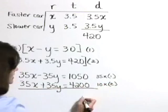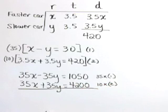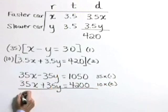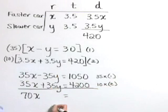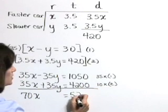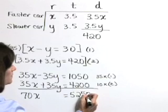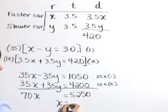Now we're ready to add these equations together. Our y variable cancels. Up front, we get 70x, and that's equal to 5,250. Divide both sides by 70 to get x is equal to 75.